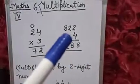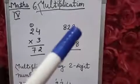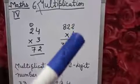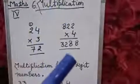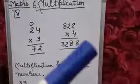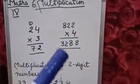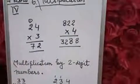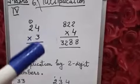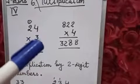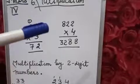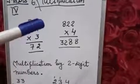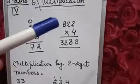Let's take another example. 822 into 4. So 4 2s are 8. Again 4 2s are 8. And 4 8s are 32. As you can see, here only 1 digit multiplication is given.